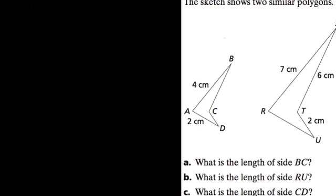We're told here that we're given two similar polygons or similar shapes, and we want to know what is the length of BC, RU, and CD. I want to label those right away, and that's usually my first point of advice. It's easy to get lost in these diagrams. So here is BC. We want to know the length of that leg.